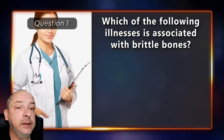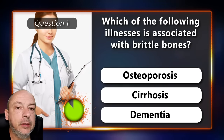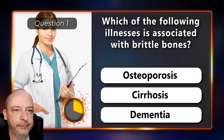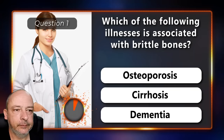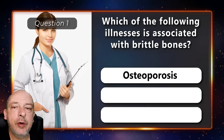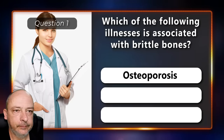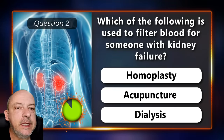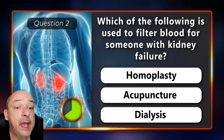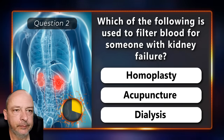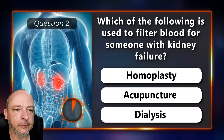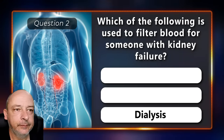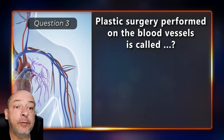Which of the following illnesses is associated with brittle bones — osteoporosis, cirrhosis, or dementia? Osteoporosis. Which of the following is used to filter blood for someone with kidney failure — homoplasty, acupuncture, or dialysis? The answer is dialysis.